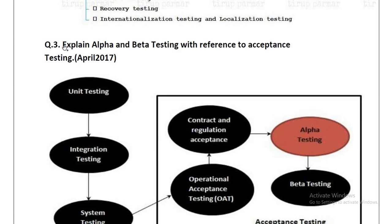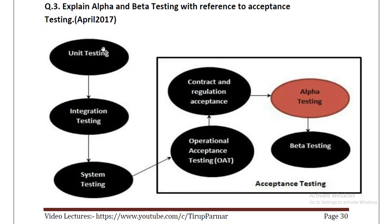The next question is about alpha and beta testing with reference to acceptance testing. In validation we saw unit testing, integration testing, and system testing: unit testing tests modules one by one; integration testing connects modules and checks they work together properly; system testing combines all components as a single system and runs it to check whether it works or not.